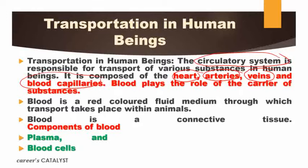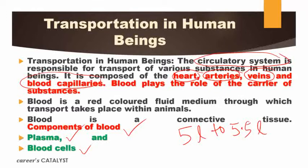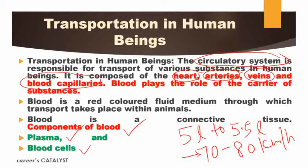In this video we are going to discuss about blood only. The components of blood are plasma and blood cells. First, some interesting facts about blood: in an adult person we have approximately 5 to 5.5 liters of blood. The speed of this blood when it travels inside our body is approximately 70 to 80 kilometers per hour. It's a very high speed — by using this speed only, blood travels inside our body through blood capillaries or our vascular system.